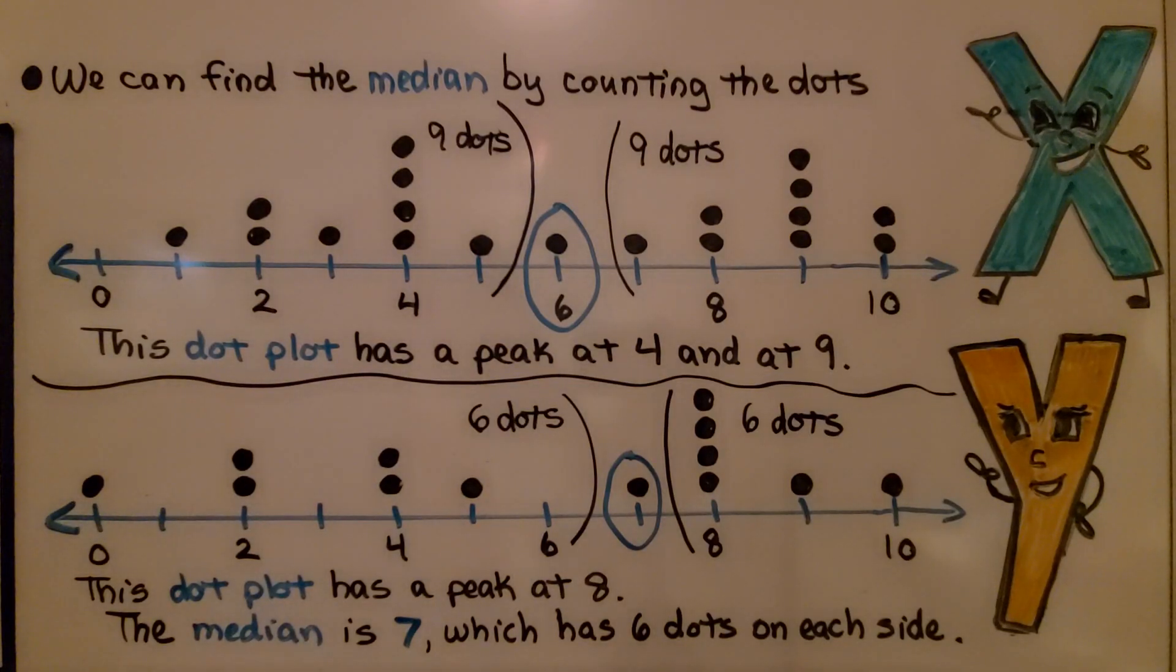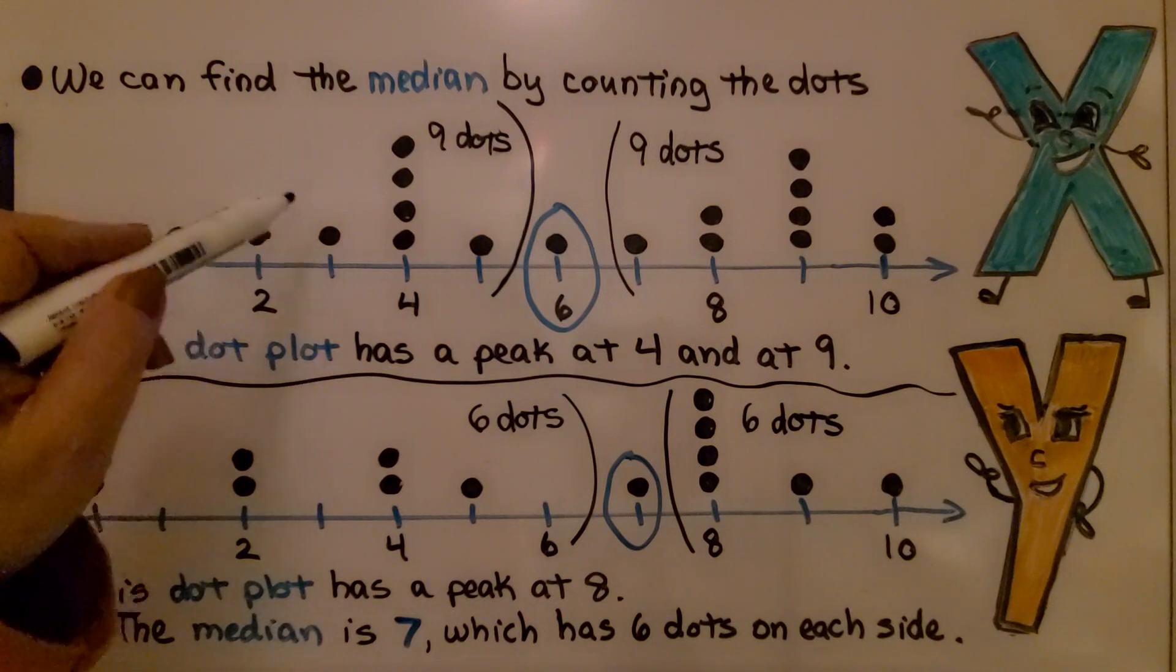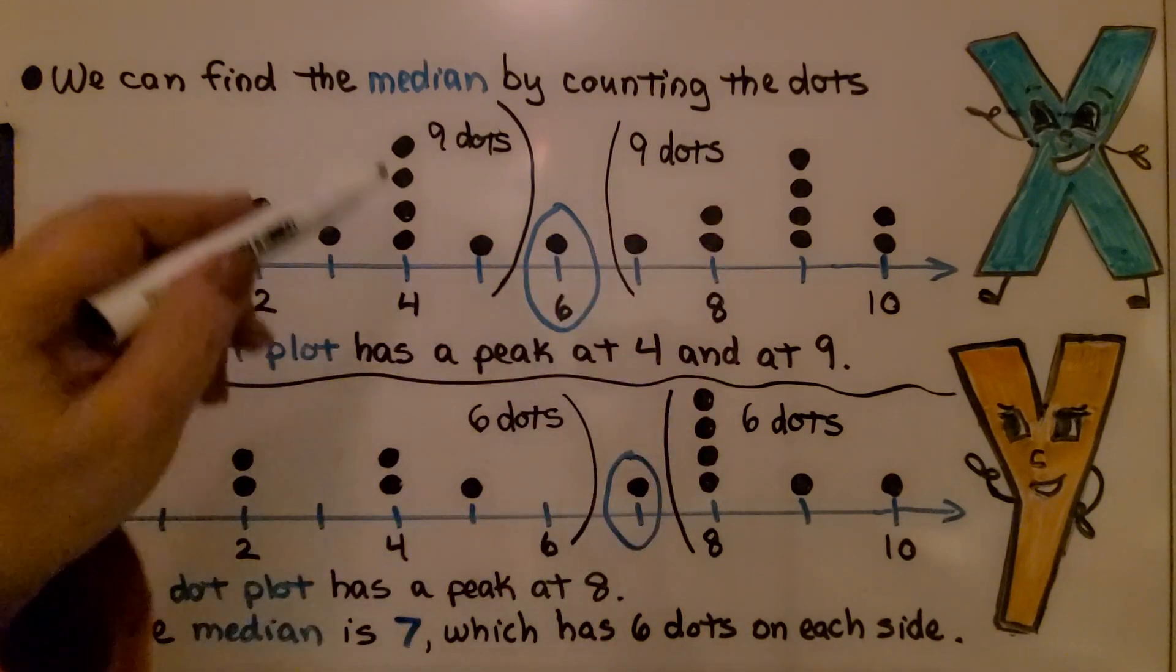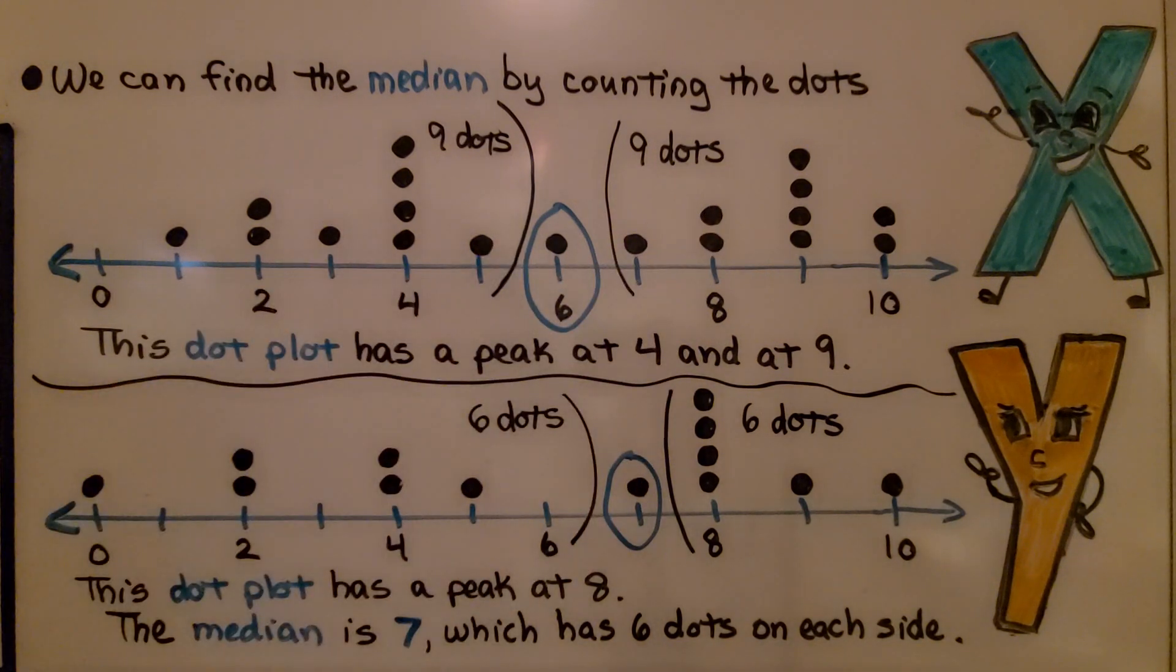We can find the median by counting the dots. We can count an equal number of dots on this side, on the left, and on the right. We have nine dots on this side, and nine dots on this side. Well, then six is the median.